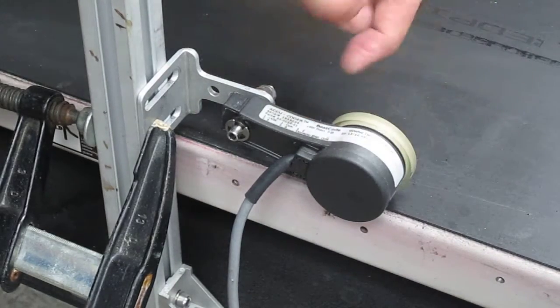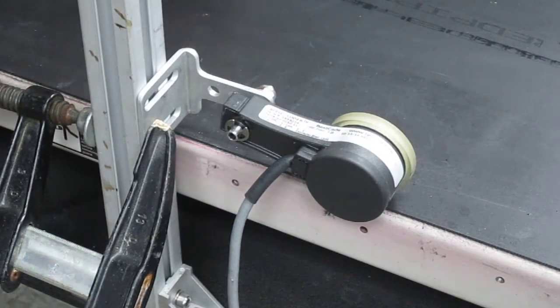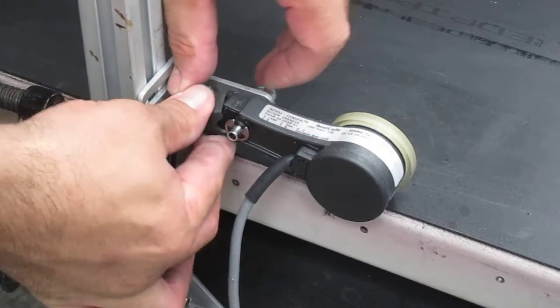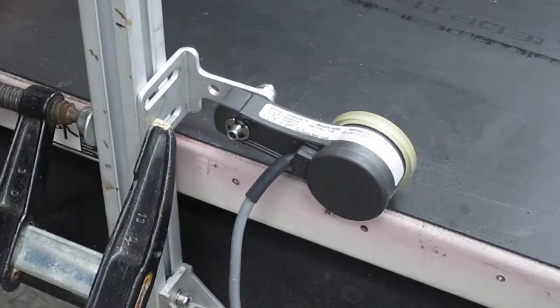Not too much pressure - you just want it to touch. You want the wheel to do all the work. Replace the boot for dust protection to keep the ink out, and you're good to go.